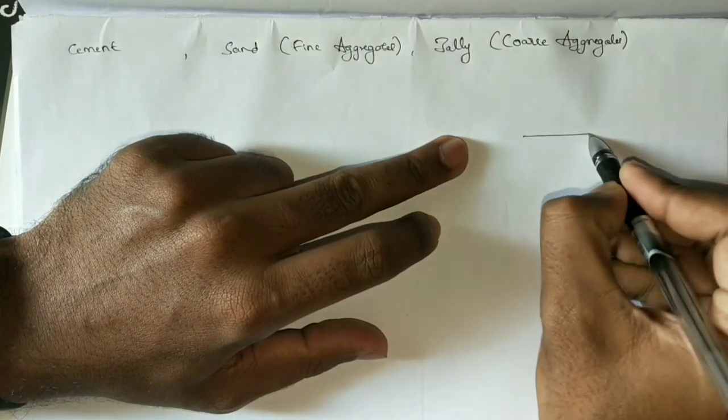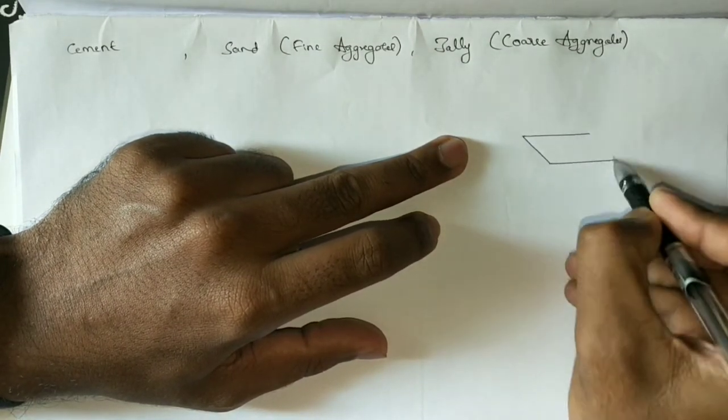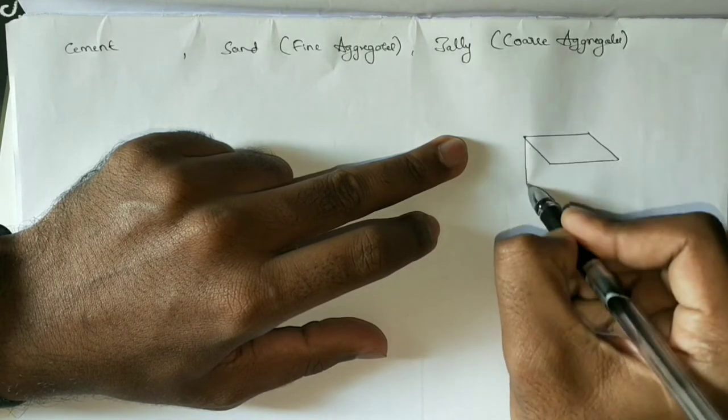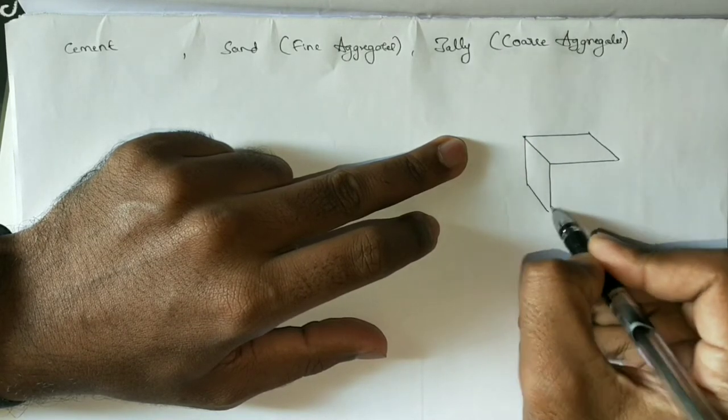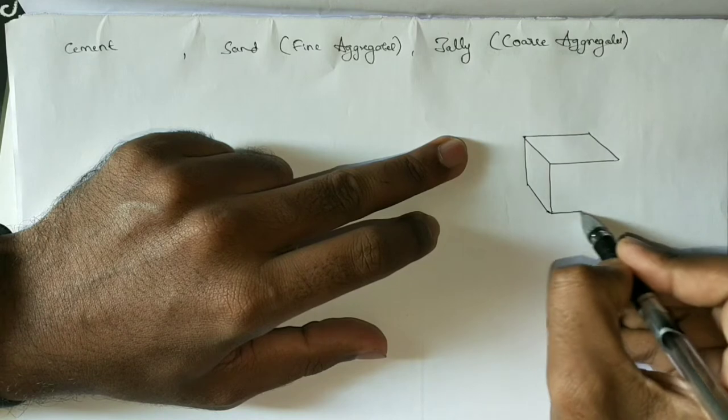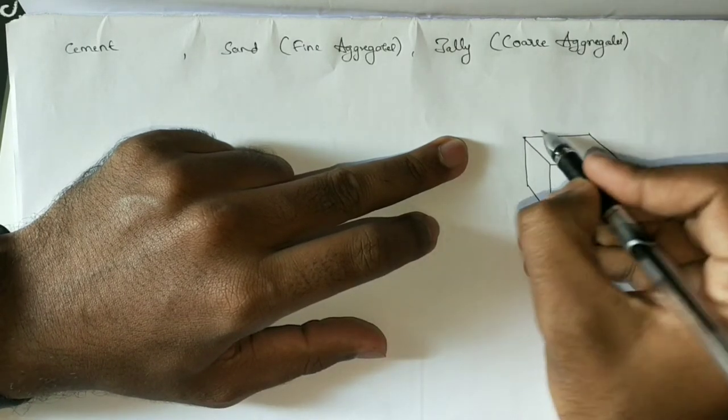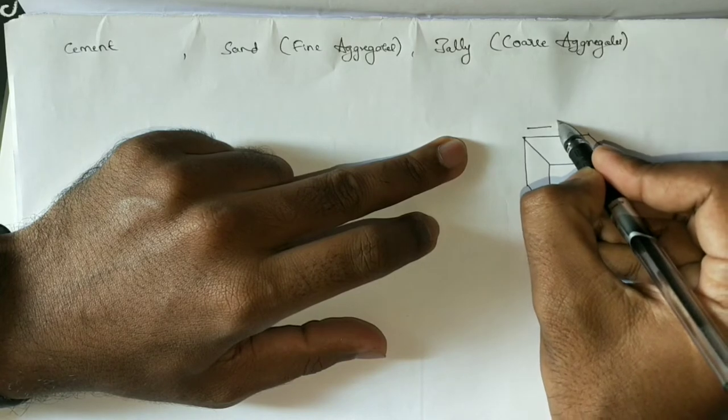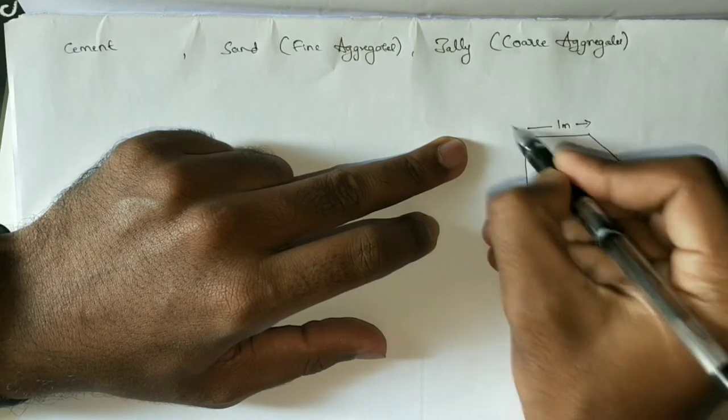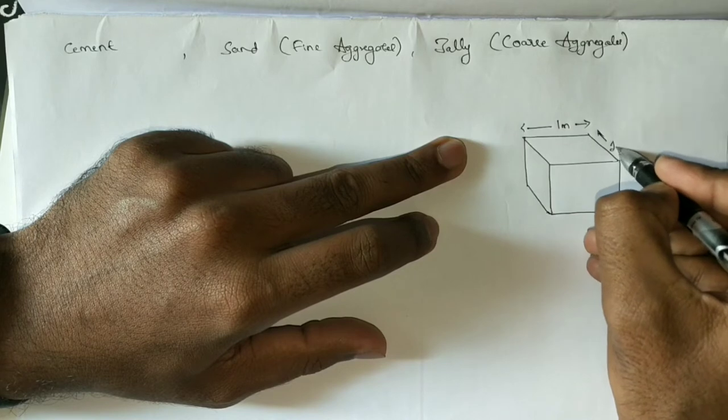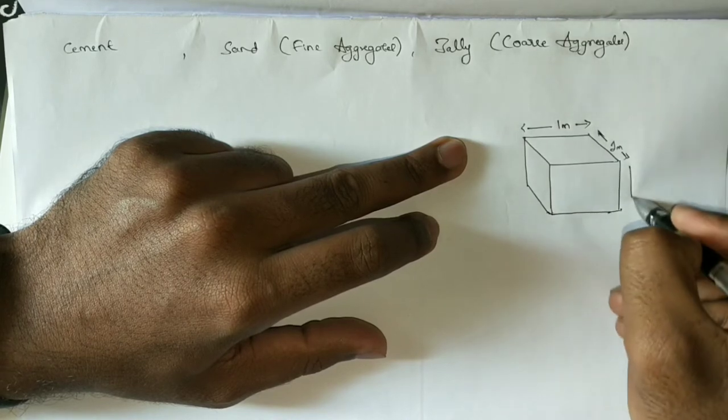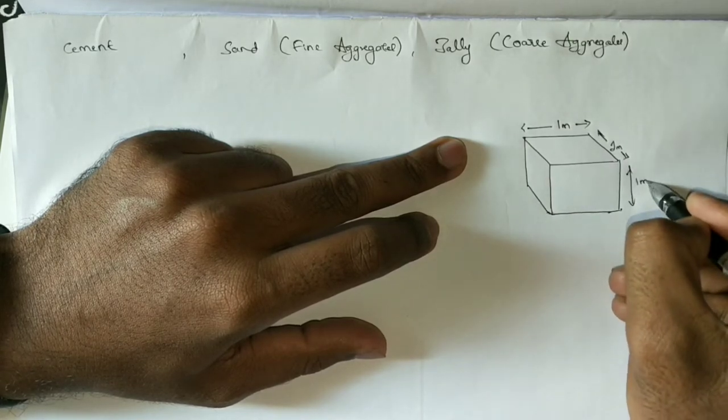For example, let's assume you have a structure with these dimensions: width is 1 meter, length is 1 meter, and depth or height is 1 meter.